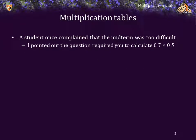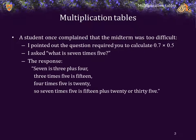A student once complained that the midterm was too difficult. The question required the student to calculate 0.7 times 0.5. I asked the student, what's 7 times 5? The response was rather surprising: well, 7 is 3 plus 4, 3 times 5 is 15, 4 times 5 is 20, so 7 times 5 is 15 plus 20, or 35. That's a great answer for grade 6.